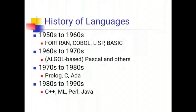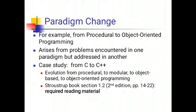From the 1980s to 1990s, C++, ML, Perl and Java were used. Then came a paradigm change — from procedural to object-oriented programming. There arose problems encountered in one paradigm but addressed in another. So the evaluation from procedural to modular is represented in this reading material.